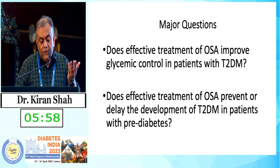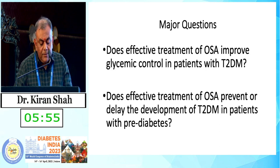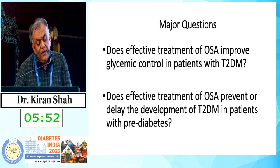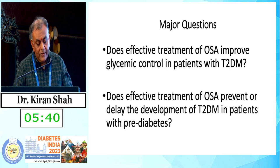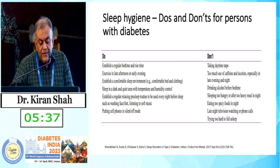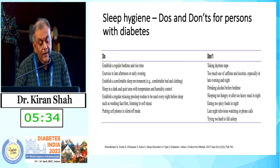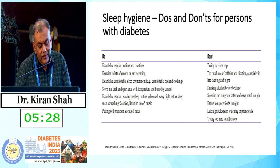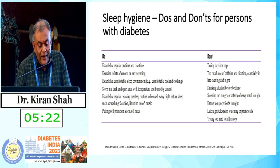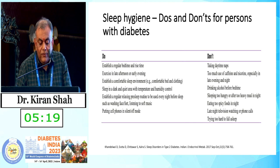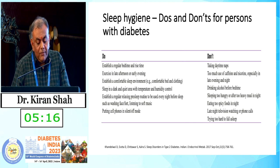Major open questions include: does effective treatment of OSA improve glycemic control in patients with type 2 diabetes, or does effective treatment of OSA prevent or delay the development of type 2 diabetes in patients with pre-diabetes? Regarding sleep hygiene, the do's include establishing a regular bedtime and rise time, and putting the cell phone on silent or off mode when going to sleep. The don'ts include eating spicy foods at night, trying too hard to sleep, late-night television watching, and late phone calls.